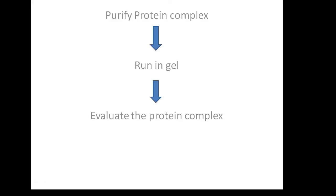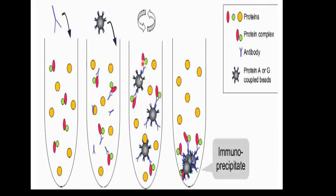The purified complex is run on an SDS-PAGE gel to evaluate the proteins present. If researchers have predicted a potential interactor, co-immunoprecipitation can be coupled with western blot as a way of validating that protein interaction. If no prediction has been made about which protein forms a complex, mass spectrometry can be used to identify new proteins in the complex.